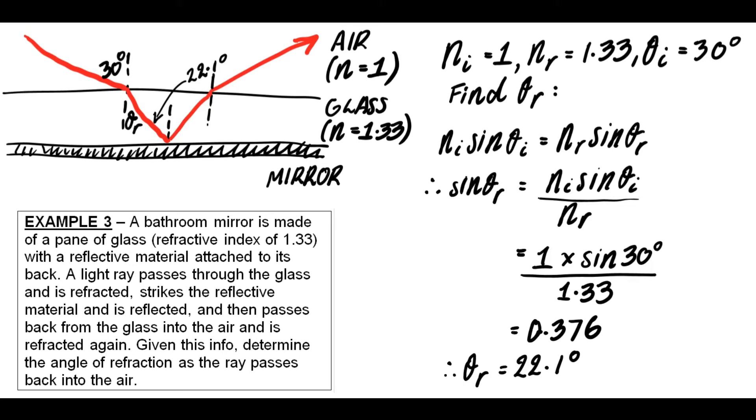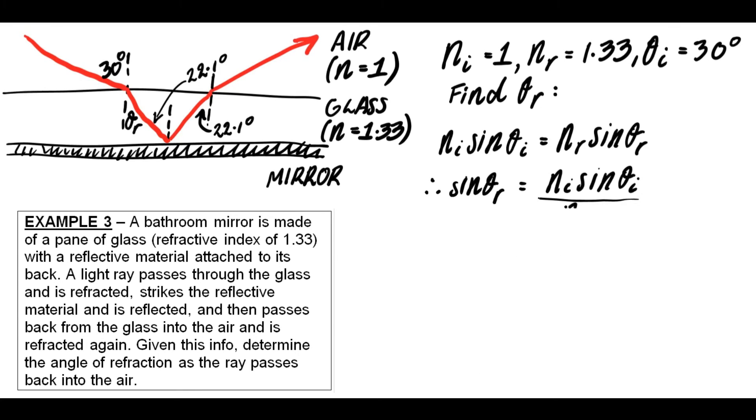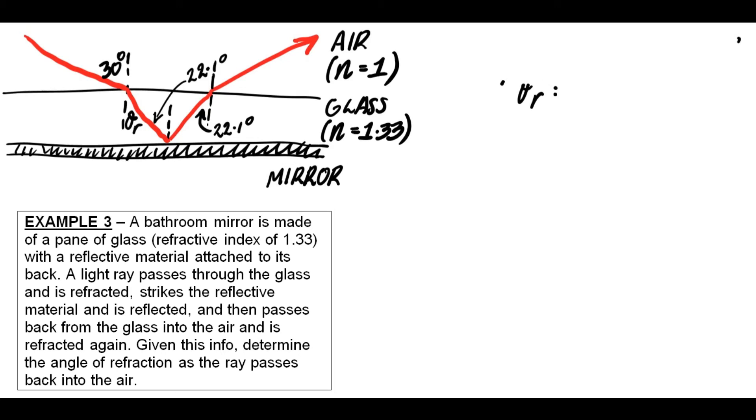Now you can also see there, that using a bit of simple geometry, that 22.1 degrees will appear at several other points in that diagram as well, which I've indicated with those arrows. Now basically, now I know that, I can work with the ray going back from the glass into the air. Now this time it's kind of the reverse. The 22.1 degrees will be my angle of incidence this time, because it's going from the glass into the air, and it's hitting that boundary as it leaves at 22.1 degrees.